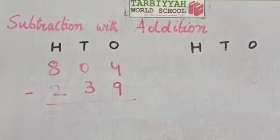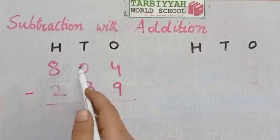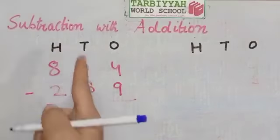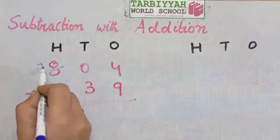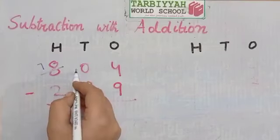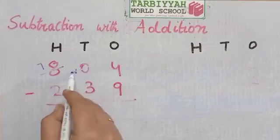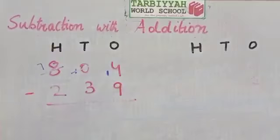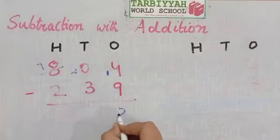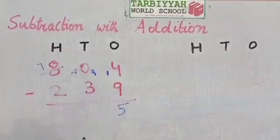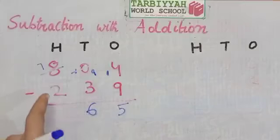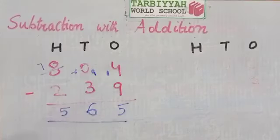Now see another example with regrouping. 4 minus 9 is not possible, and 0 tens will not give any number, so we take borrow from 8 hundreds. 8 hundreds become 7 hundreds and 0 tens become 10 tens. Now 10 tens give borrow to 4 ones, so 4 ones become 14 ones. 14 minus 9 is 5, 9 minus 3 is 6, and 7 minus 2 is 5. So the answer is 565.